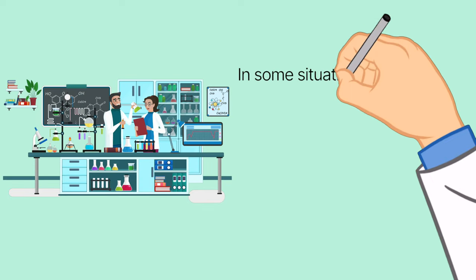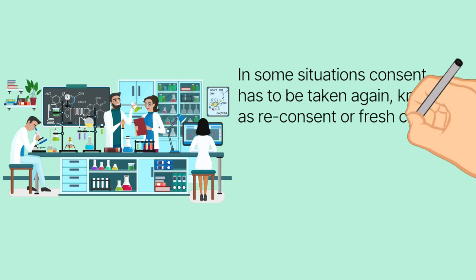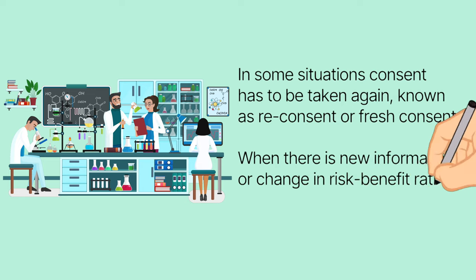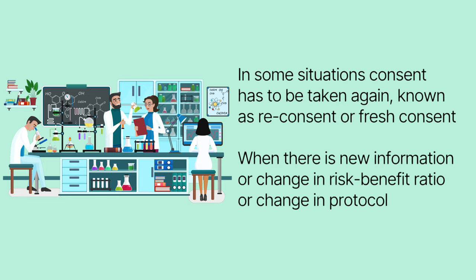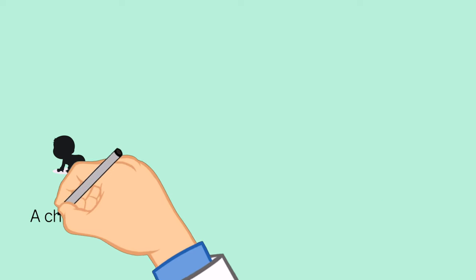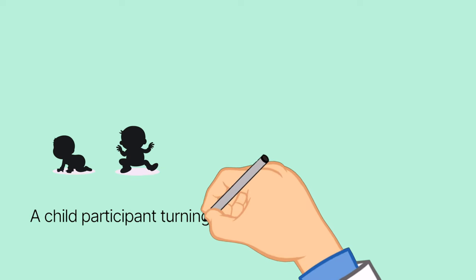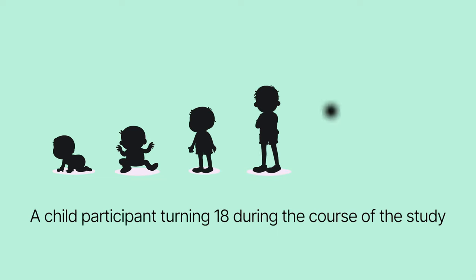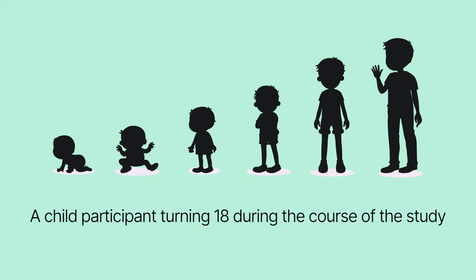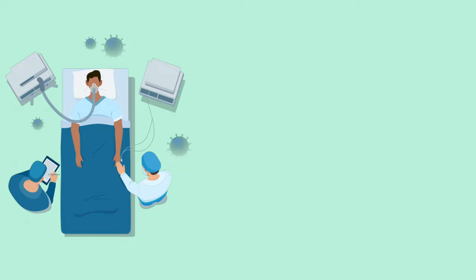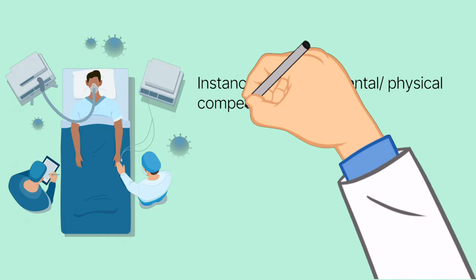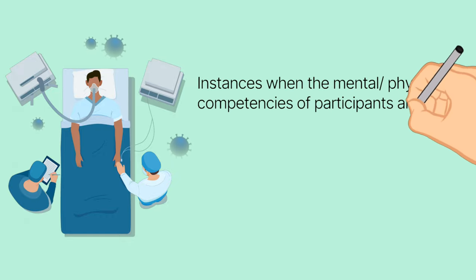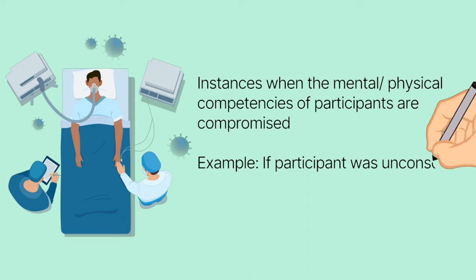In some situations, consent has to be taken again during the course of the study. This is known as re-consent or fresh consent — for example, when a child participant turns 18 during the study, or when the mental or physical competency of a participant is affected.